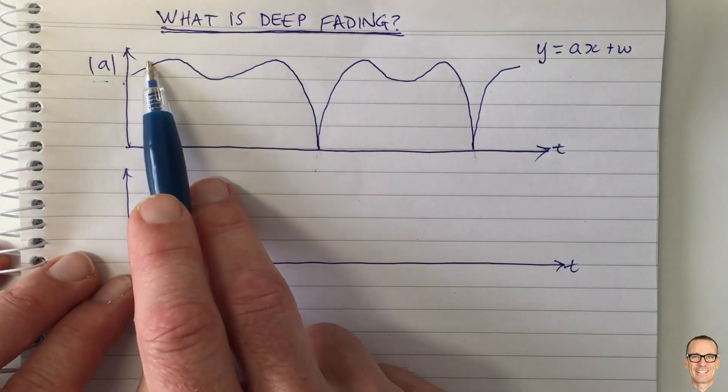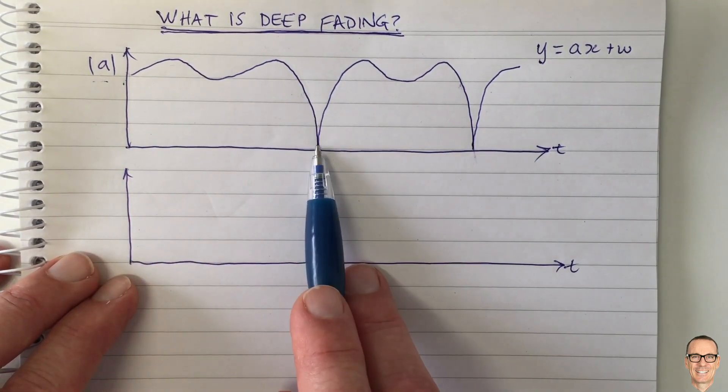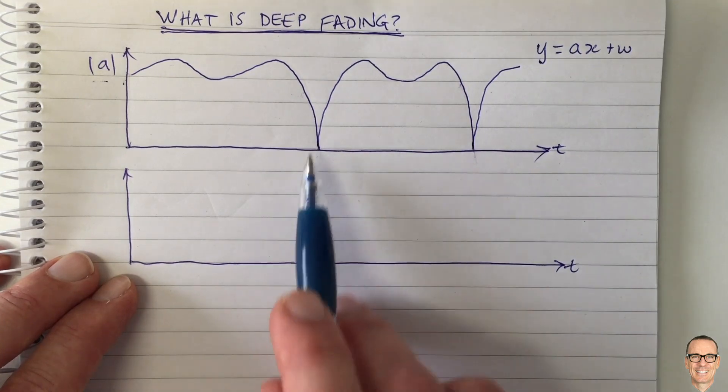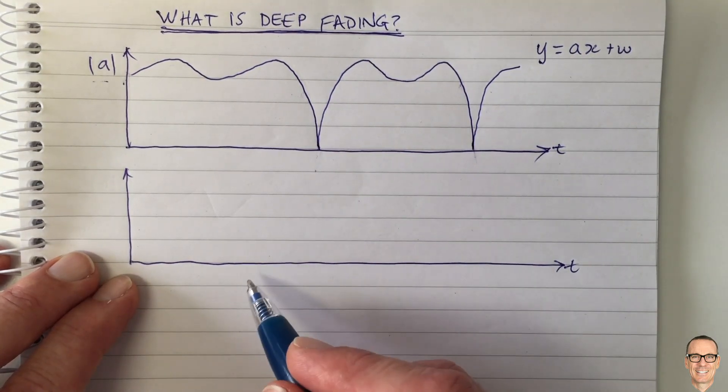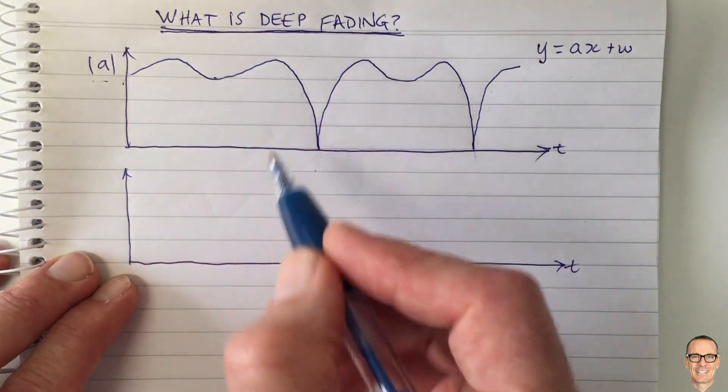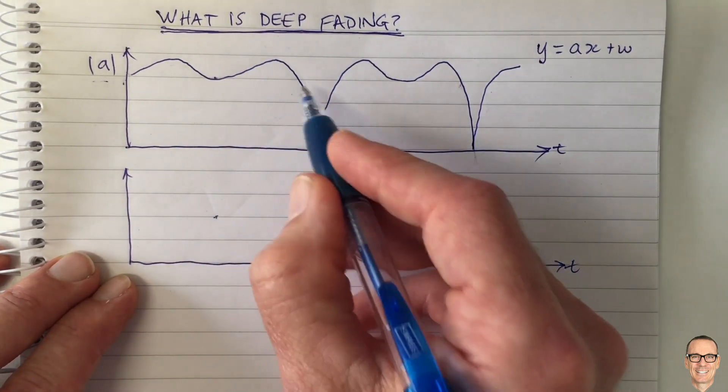So because this is the log scale, the high values get compressed, the low values get expanded. If you want more information on this, there's a video on the channel about decibels. And let's see here, this one, I'm just going to plot this on the linear.